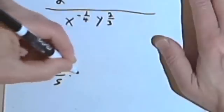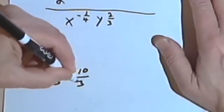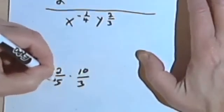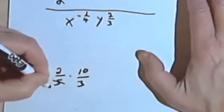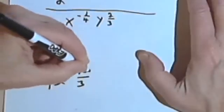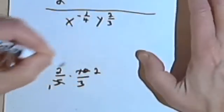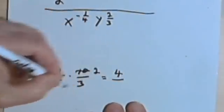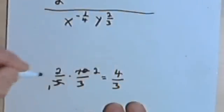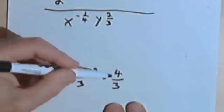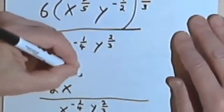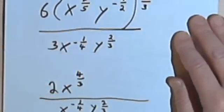So let's calculate 2/5 times 10/3. I can simplify this before I multiply it out. I can divide 5 into both the denominator of the first fraction and the numerator of the second fraction. Then multiplying across: 2 times 2 is 4, and 1 times 3 is 3. So 2/5 times 10/3 is 4/3, which means I'm now going to have x to the 4/3.